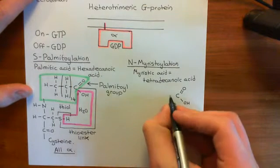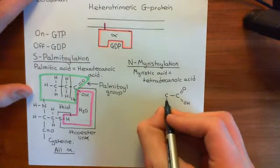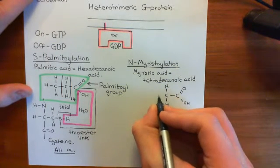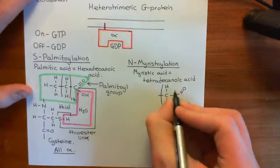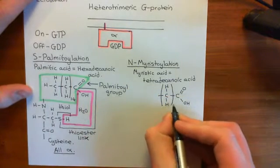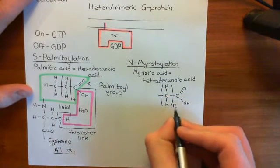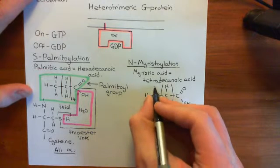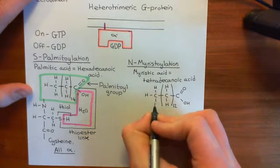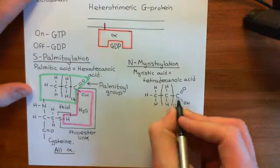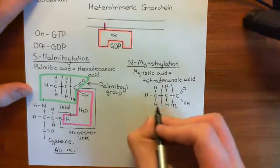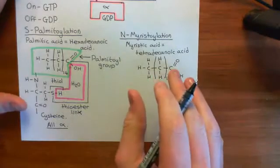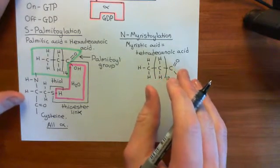Let's draw myristic acid. Here is our carboxylic acid group. We need 12 methylene groups - I'll bracket it and subscript 12, then we'll have the terminal methyl group coming off the end. That takes us up to a total of 14 carbons: 12 in the middle, one on either side. So this is myristic acid, or tetradecanoic acid.